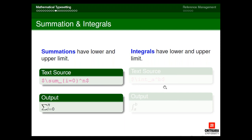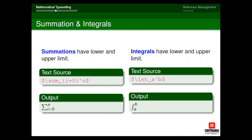For definite integrals from A to B: enclose in dollars, use the command backslash int, then underscore A (subscript for lower limit) and caret B (superscript for upper limit). When you write this in the text source, you get the integral with limits A to B as output.